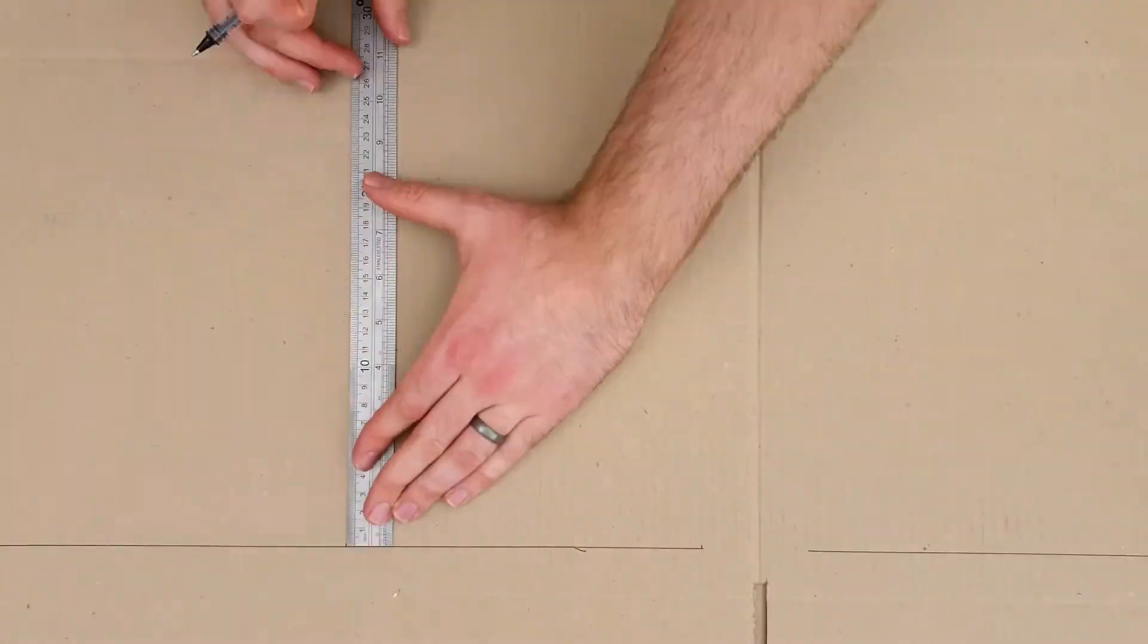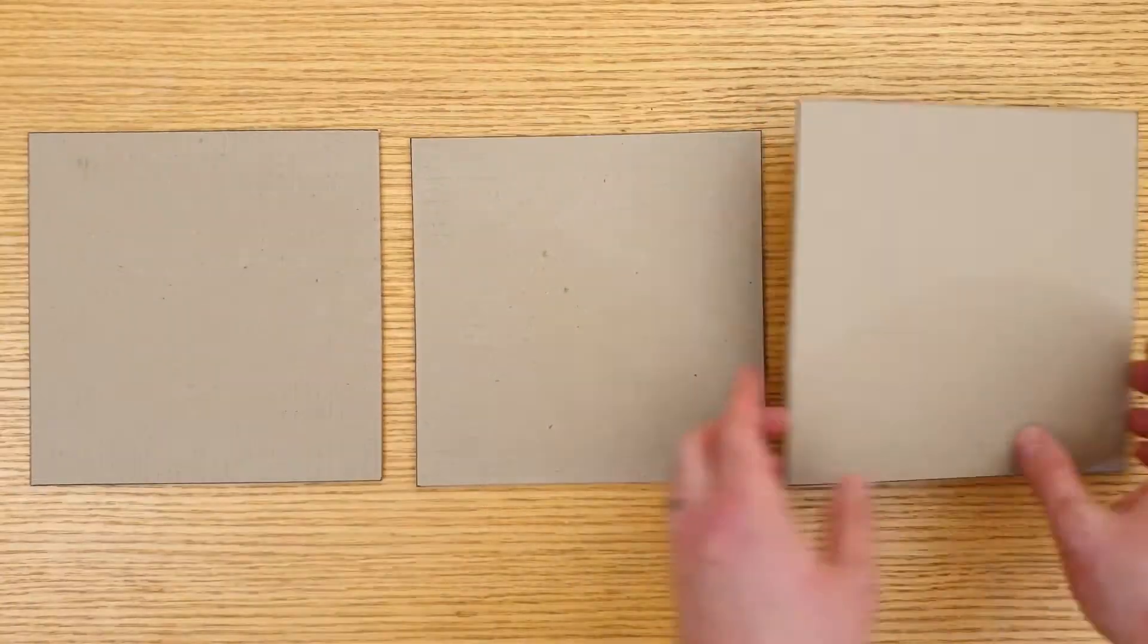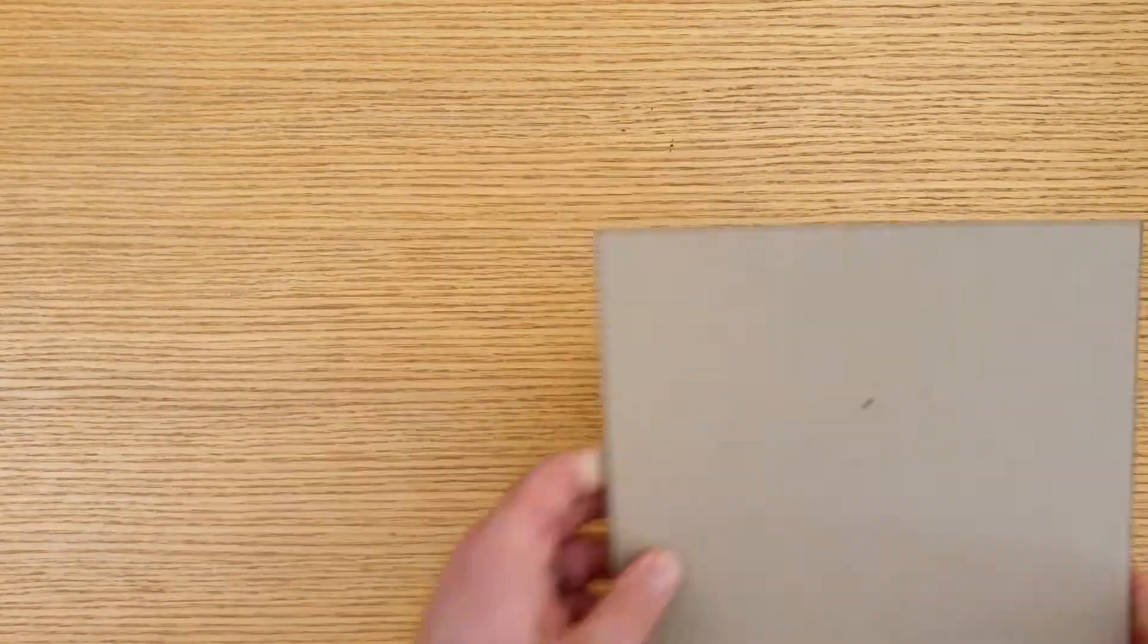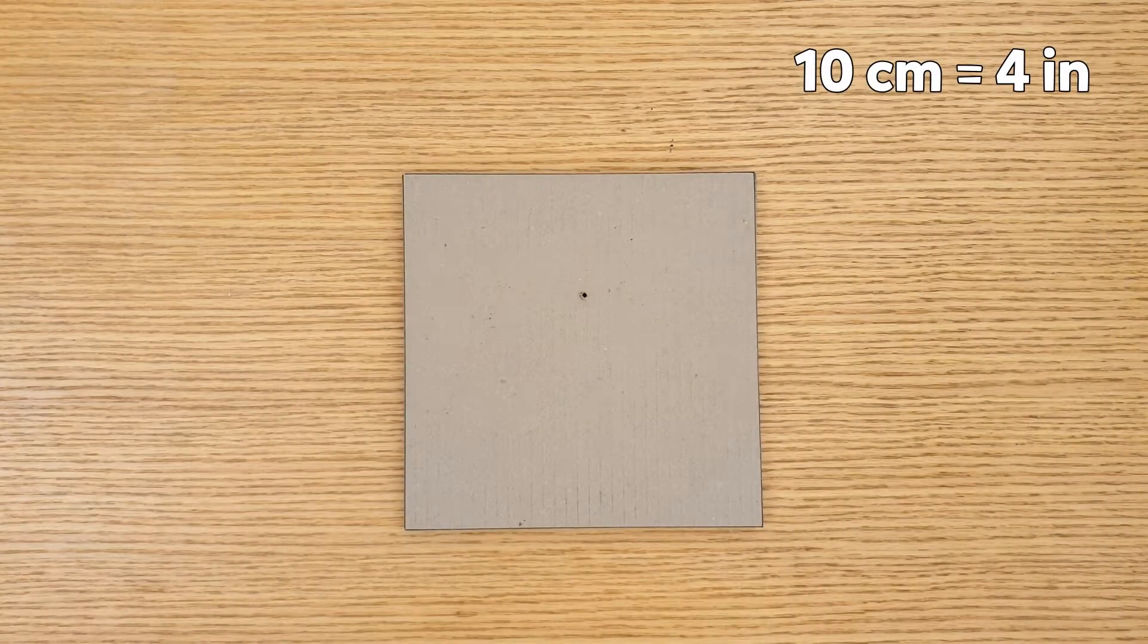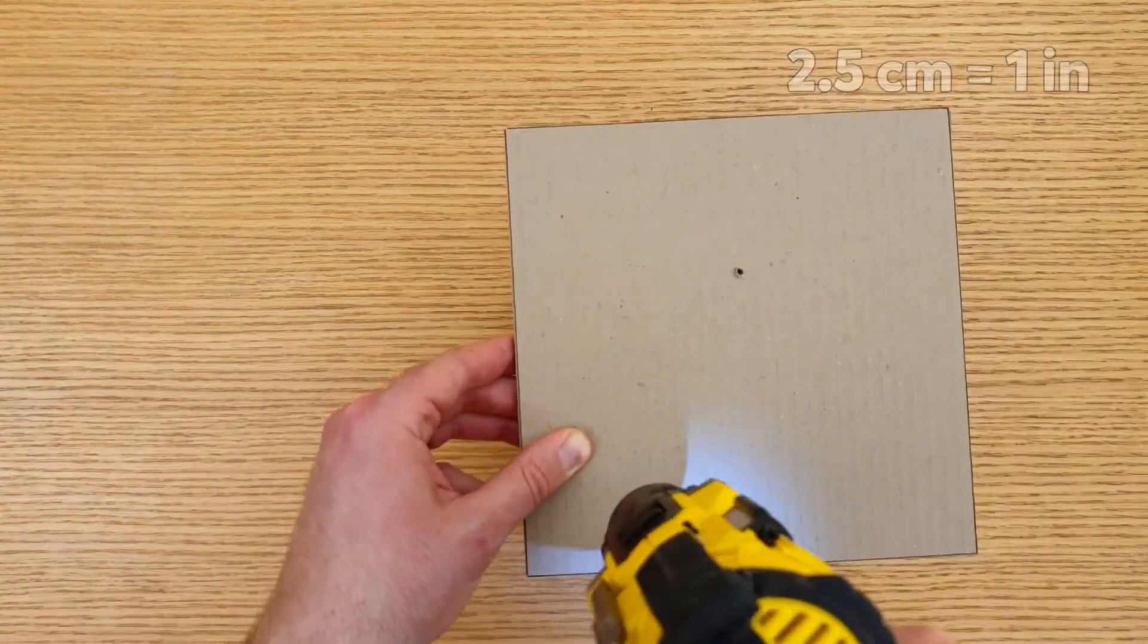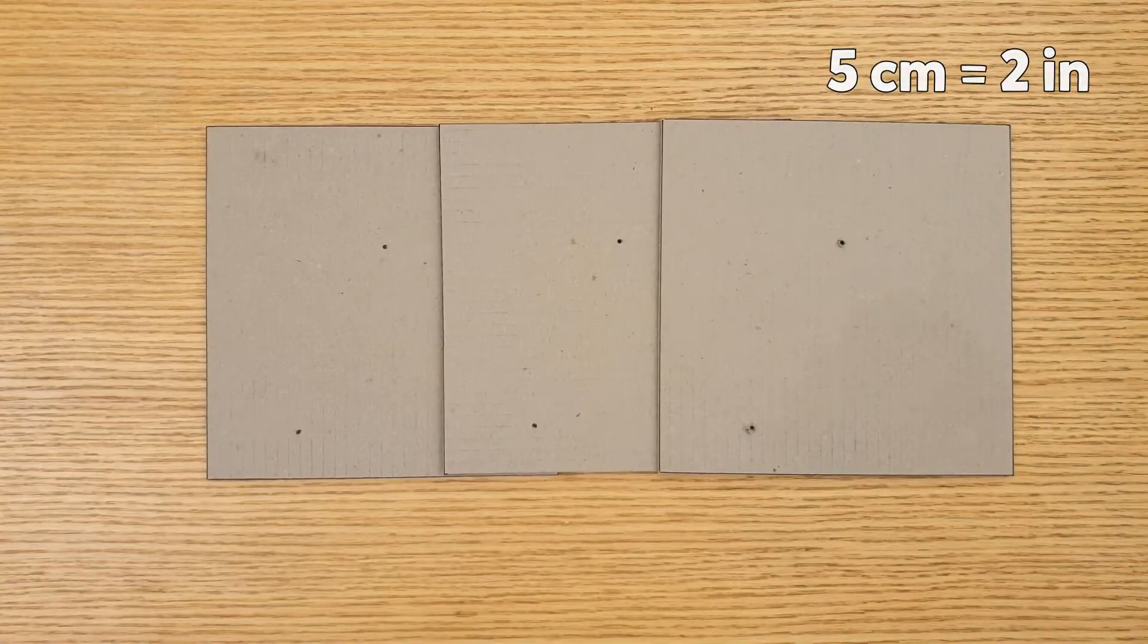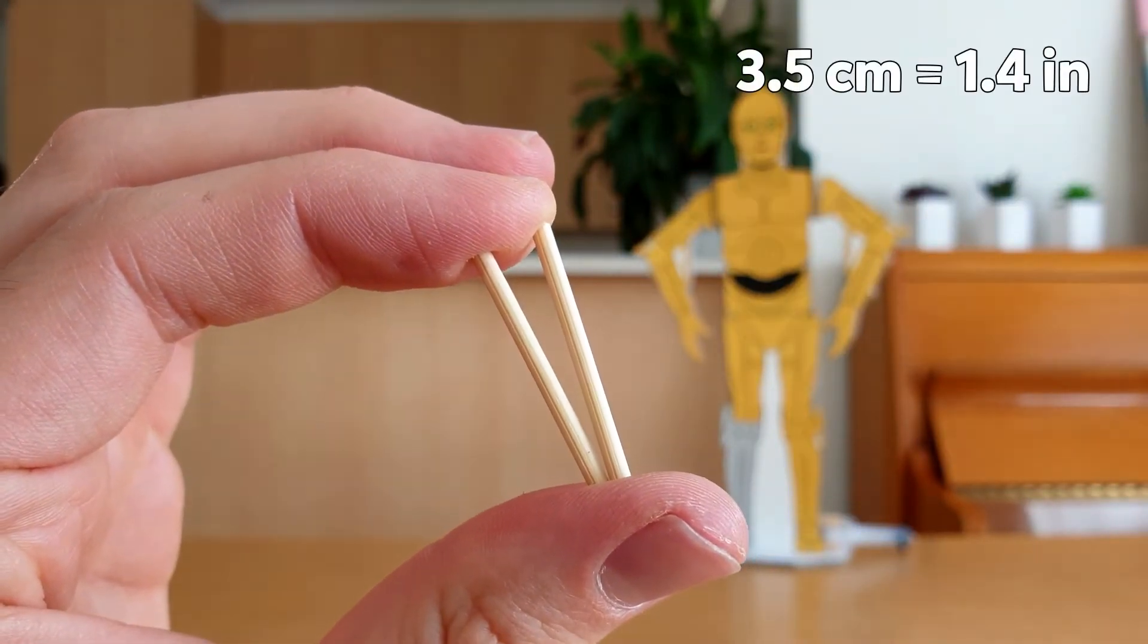We just need to make a base for him to stand on. Cut out 3 cardboard squares that have 20cm sides. Stack these squares on each other and drill or poke a 3mm hole that's 7cm from the top and 10cm from each side. Add another hole that's 2.5cm from the bottom and 5cm from one side. Cut another 2 pieces of skewer, 3.5cm long.